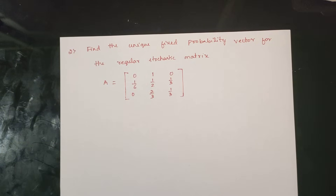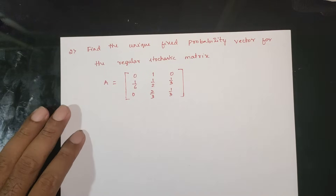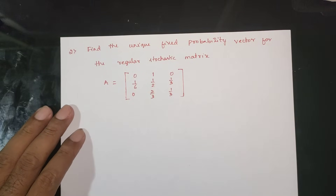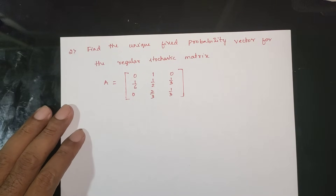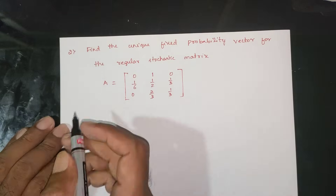Find a unique fixed probability vector for the regular stochastic matrix A, equal to: first row 0, 1, 0; second row 1/6, 1/2, 1/3; third row 0, 2/3, 1/3.